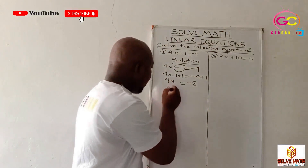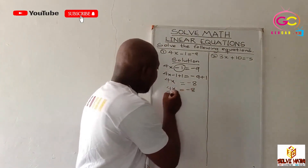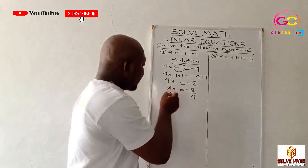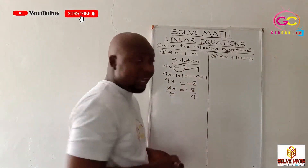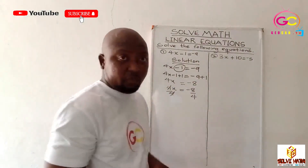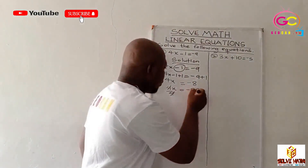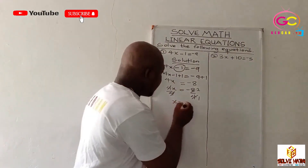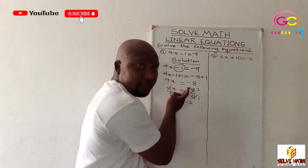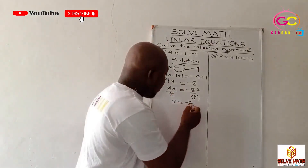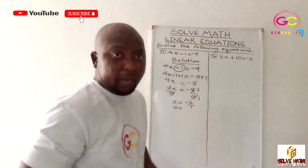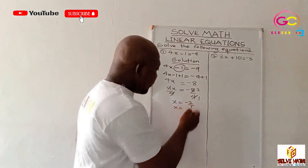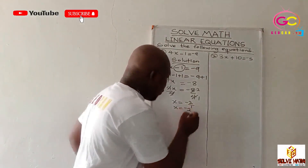So write the equation again: 4x is equal to negative eight, divided by 4, divided by 4. 4 will cancel 4. 4 will go into 8 how many times? 4 times 2 will give you 8. And 4 will go into 4 one time. So we are left with x is equal to negative two over one. Any number over one is the same as that number, so negative two over one is the same as negative two.